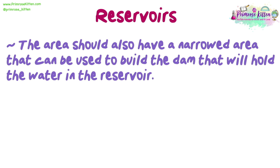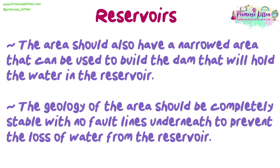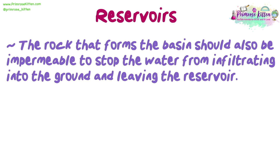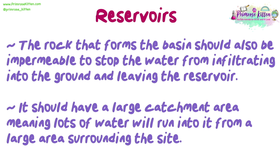The area should also have a narrowed section that can be used to build the dam that will hold the water in the reservoir. The geology of the area should be completely stable, with no fault lines underneath, to prevent the loss of water. The rock that forms the basin should also be impermeable, to stop the water from infiltrating into the ground and leaving the reservoir. It should have a large catchment area, meaning lots of water will run into it from a large area surrounding the site.